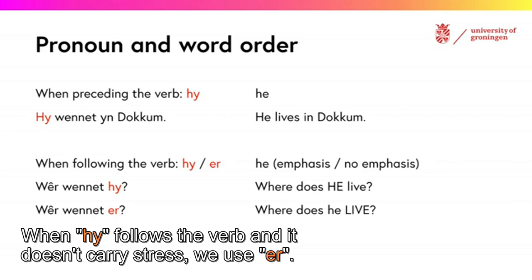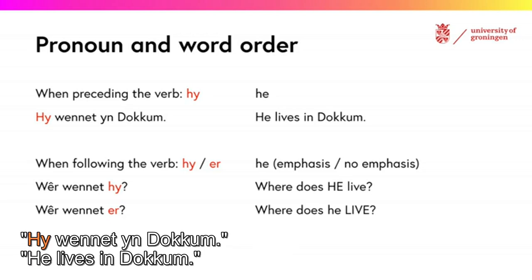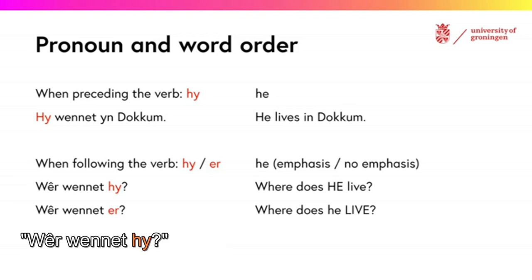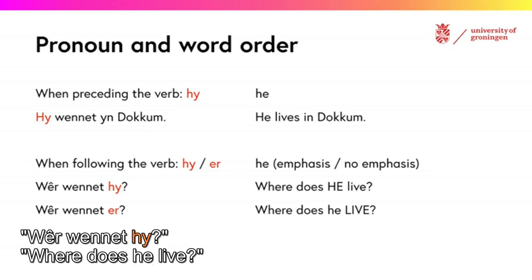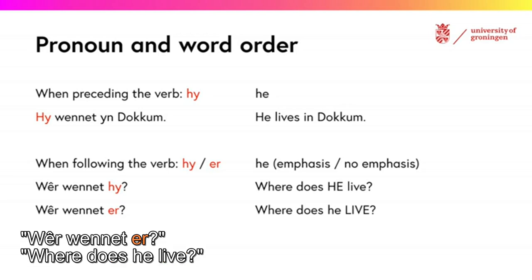When 'he' follows the verb and does not carry stress, we use 'ur'. 'He vennet in Dokkum' — he lives in Dokkum. 'Where vannet hij?' — where does he live? 'Where vannet hij?' — where does he live?